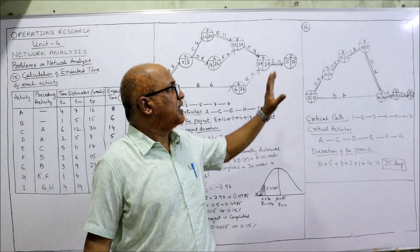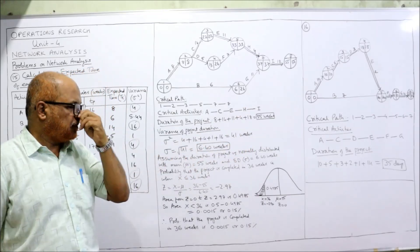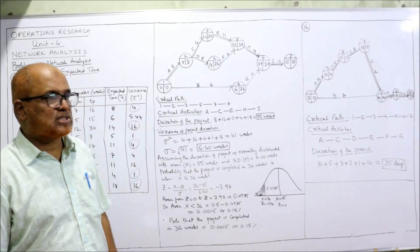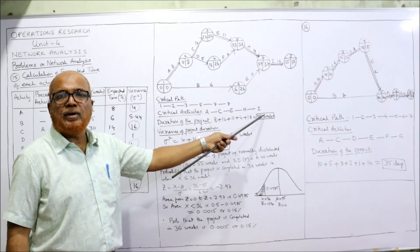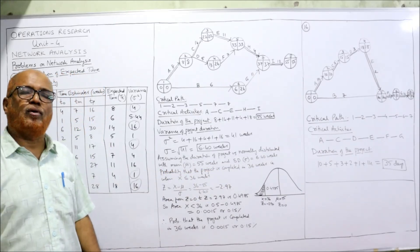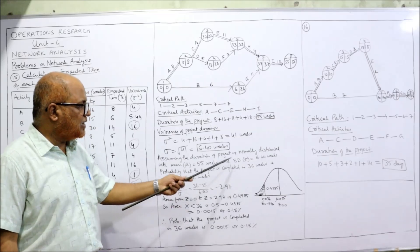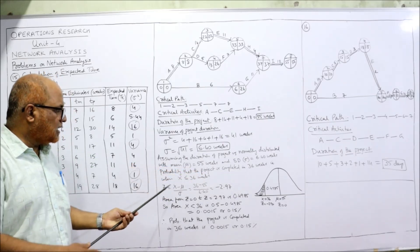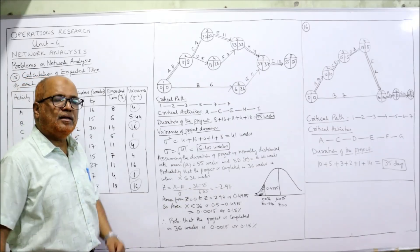We have calculated EST, LFT, critical path, duration, and variance. Now the question asks: what is the probability that the project will be completed in 36 weeks? The expected time is 55 weeks, but we want the probability it finishes in 36 weeks. We assume the project duration follows a normal distribution where μ = 55 weeks and σ = 6.4 weeks. Our X value is 36. So Z = (X − μ) / σ = (36 − 55) / 6.4 = −2.97.